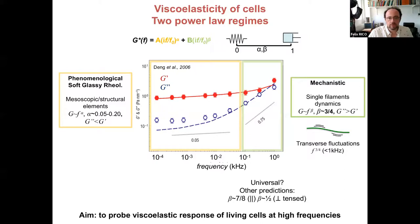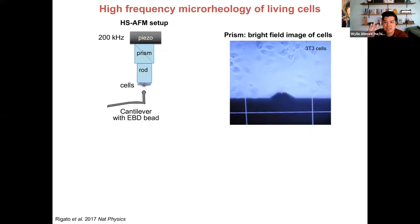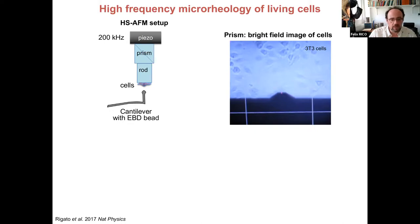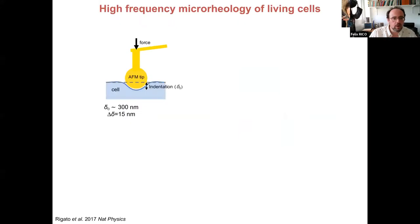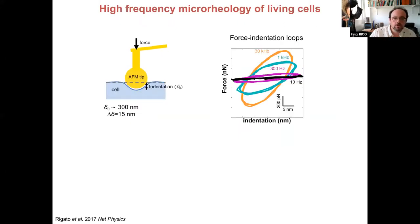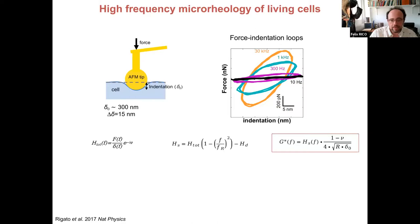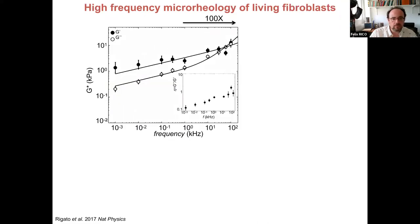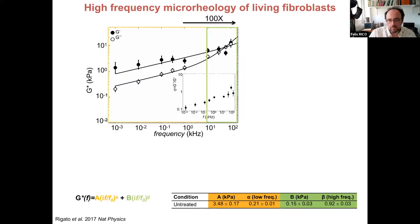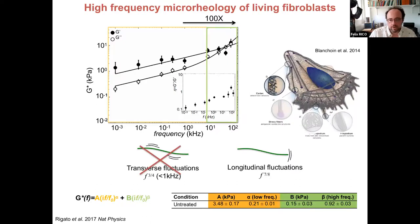We adapted the high-speed AFM system — adding transmitted light and using small cantilevers with a sphere at the end. We applied low-amplitude oscillations to obtain force versus indentation loops and, using appropriate theory, extracted the viscous and elastic terms. Going a hundred to a thousand times faster than all previous techniques, we observed an exponent of about 0.9, closer to the seven-eighths prediction from longitudinal fluctuations, likely related to the cortical actin network.